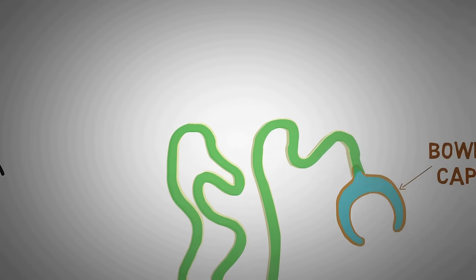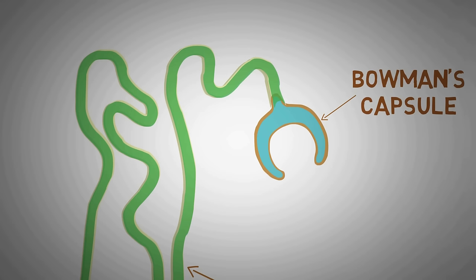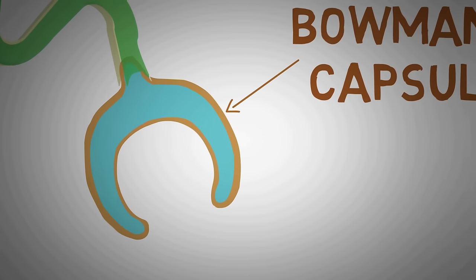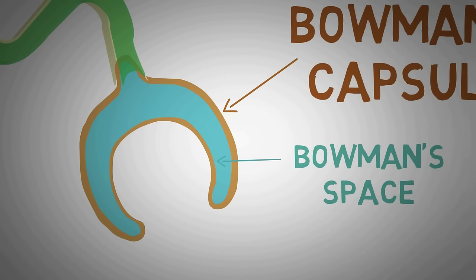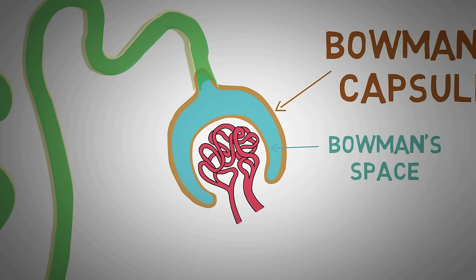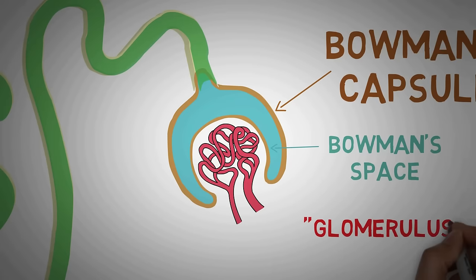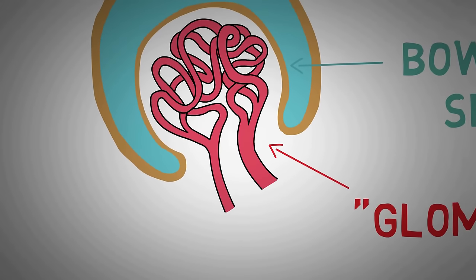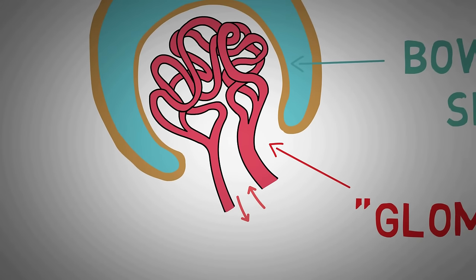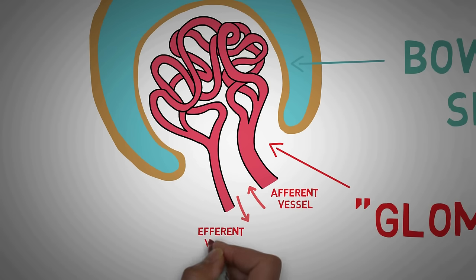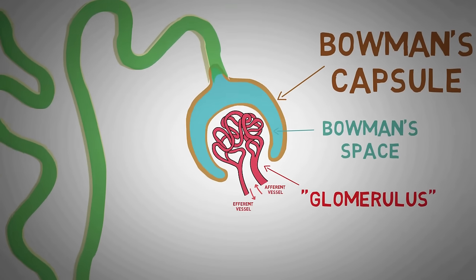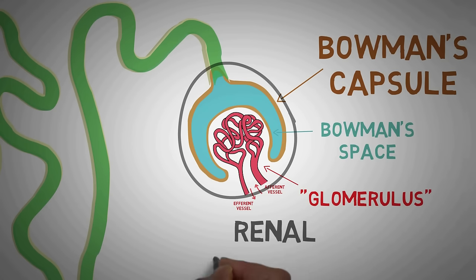Coming back to the nephron, the cup-shaped structure at one end is known as the Bowman's capsule. The space inside it is known as the Bowman's space. The Bowman's capsule encloses a cluster of blood vessels known as the glomerulus, derived from the Latin word glomer meaning a ball of thread. The blood vessel bringing blood into the glomerulus is the afferent vessel, and the one taking blood out is the efferent vessel — afferent brings blood in, efferent takes it out. The Bowman's capsule and glomerulus together constitute the renal corpuscle.